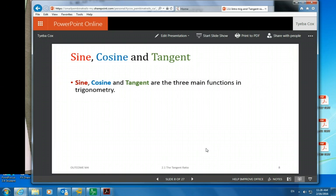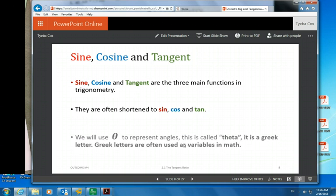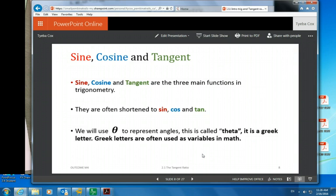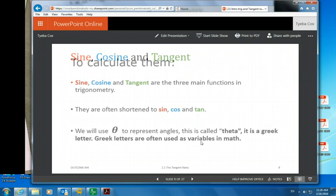So sine, cosine, tan are three main functions. They're shortened to sin, cos, tan, even though when we write them out long, that's how they're spelled. And then theta is going to be the angle. We could use other Greek letters as well, like alpha, beta, gamma, if we're ever dealing with more than just theta, which is just what's standard used in math.